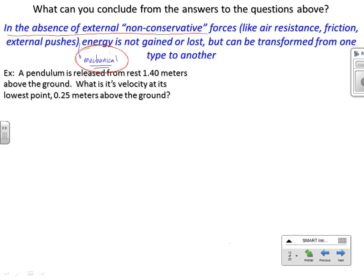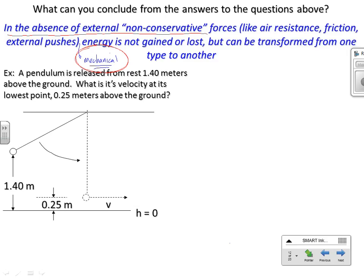The classic conservation of mechanical energy example is the pendulum. We have where it's released and we want its velocity V at its lowest point. If we use this idea of conservation of mechanical energy, we start with ME initial equals ME final. We can expand this into initial GPE and initial KE equals final GPE and final KE.